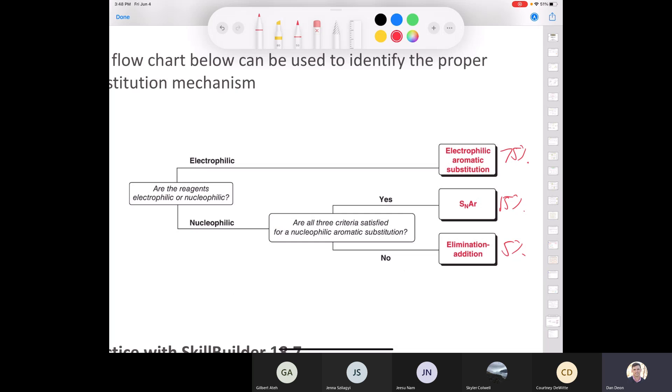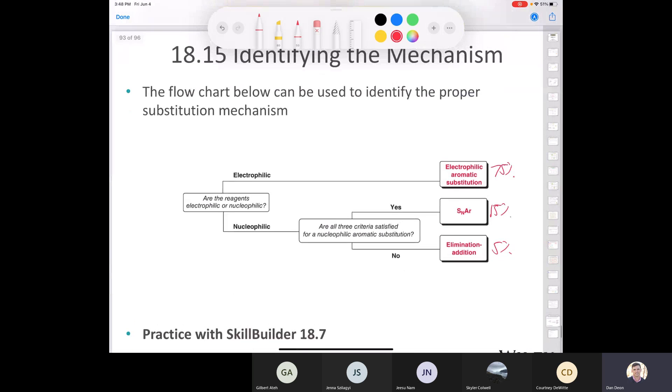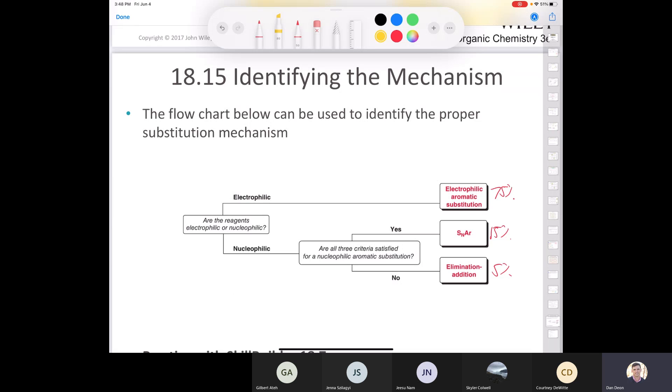Anyhow, so you can use this flow chart. I mean, you just look at the reagent. Are you making an electrophile? Well, if you do, then you're going to end up with electrophilic aromatic substitution. Are you using a nucleophile? And do you have all the criteria met for electrophilic aromatic substitution? Do you have a good leaving group? Do you have a strong electron withdrawing group? Is it in the ortho or para position relative to the electron withdrawing group? Yes, then it's probably an SNAR. And if it's not, then it's probably an elimination addition reaction.